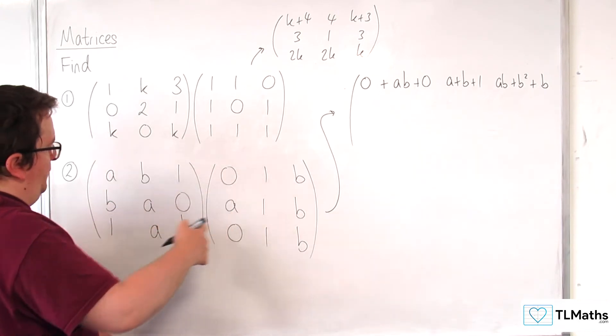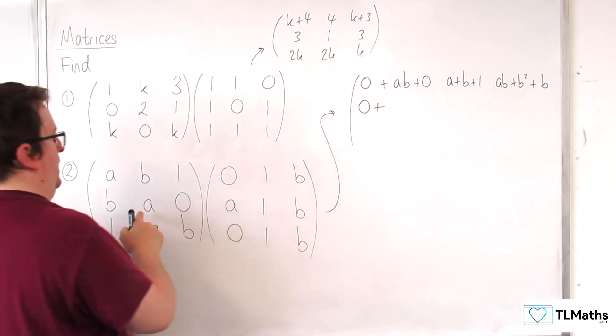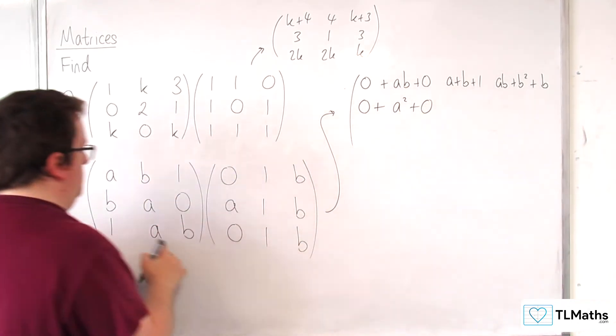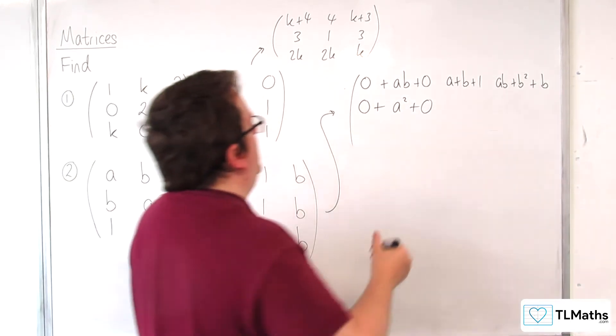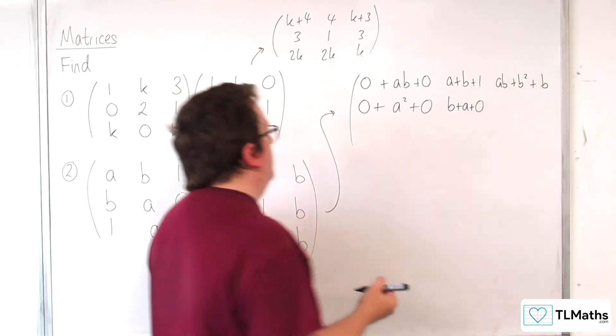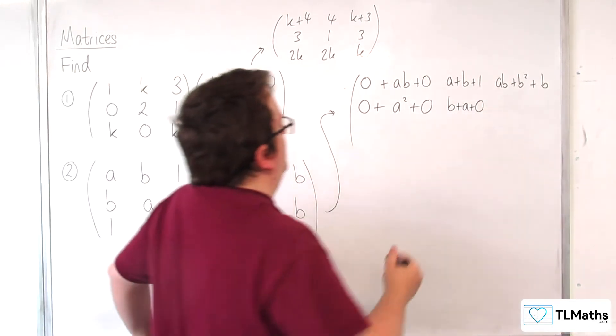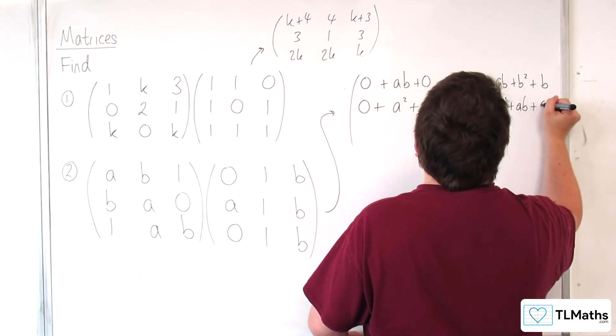Then we've got the middle row times 0, a, 0, so 0, plus a squared, plus 0. Then ba0 times 1, 1, 1, so b, plus a, plus 0. Then b, a0 times bbb, so b squared, plus ab, plus 0.